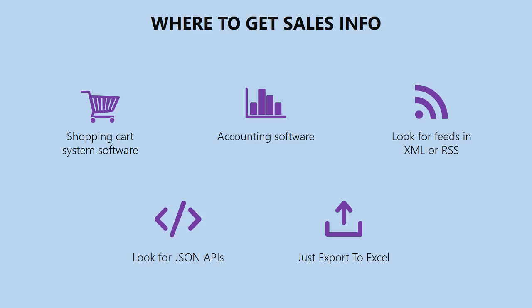Here are a number of methods. Number one, look for feeds within your accounting software — does it give you a feed in either XML or RSS? Or does the accounting software have a JSON API that you can use to hook into? If not, just export the information to Microsoft Excel. Pretty well every piece of accounting software can export to Excel. If it doesn't, you're probably using the wrong accounting software.